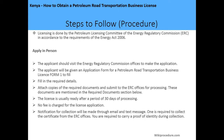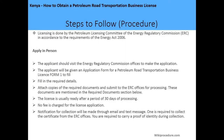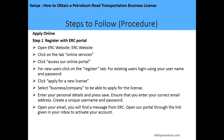Fill in all required details, attach the required documents already mentioned, and submit for processing. After deliberation by the Petroleum Licensing Committee, you will be notified within 30 days to collect your license if your application is successful. No fee is charged for the application. You are required to collect your license from the ERC offices and must carry proof of identification when collecting.